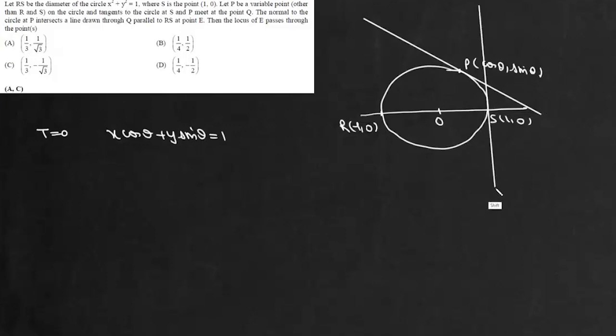So if we draw a tangent at this point S, these two tangents they meet at this point Q. Now tangent at S is simply x = 1. So coordinate of this point Q will be (1, (1 - cos θ)/sin θ). Now 1 - cos θ is 2 sin² θ/2 and this is 2 sin θ/2 cos θ/2. So we can also write this as (1, tan θ/2).